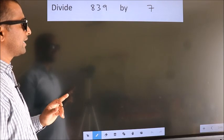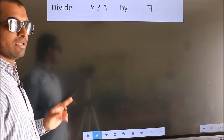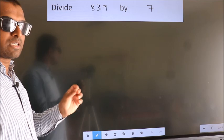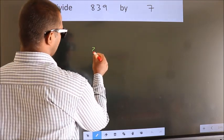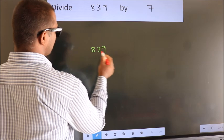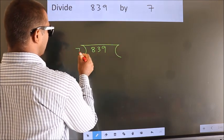Divide 839 by 7. To do this division, we should frame it in this way. 839 here, 7 here.